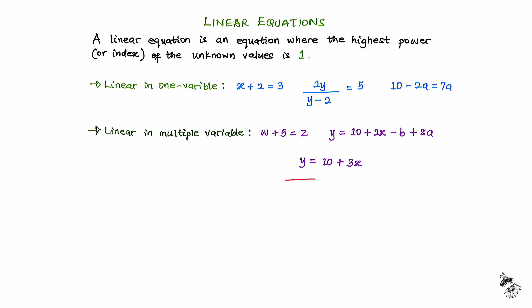Looking at the third example, y equals 10 plus 3x, which is a common representation of the equation of a line. We can see that in this example we have two variables: y and x. The power of y is 1 and the power of x is 1, which means this equation is linear. But because we have more than one unknown variable, we say the equation is linear in multiple variables. Our focus is to deal with equations that are linear in one variable.